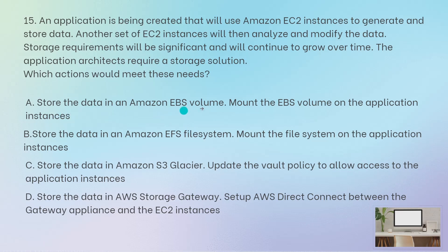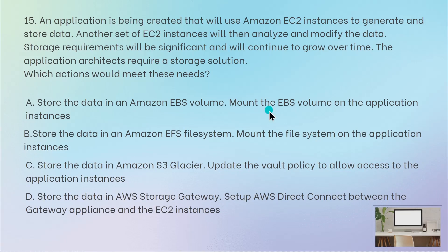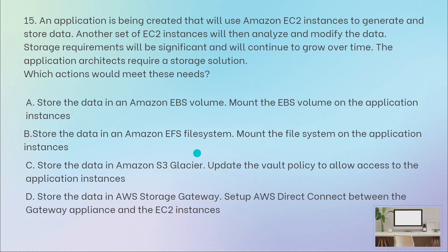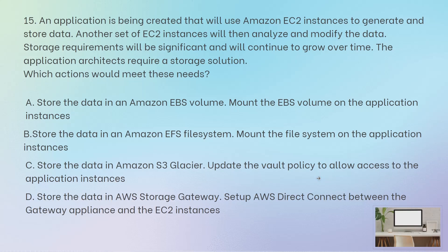Store the data in an Amazon EBS volume and mount the EBS volume on the application instances — this is incorrect. Though there is a new feature in EBS called multi-attach that allows you to attach multiple Nitro instances, there are specific constraints through which you cannot do it on EBS. Store the data in an EFS file system and mount the file system on the application instances — this is the correct answer.